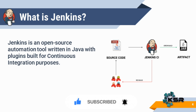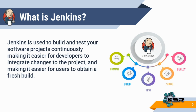Jenkins is a continuous integration tool used to build and test your software projects continuously, making it easier for developers to integrate changes on the project and making it easier for users to obtain a fresh build. In short, Jenkins is a continuous integration tool that allows continuous development, test, and deployment of newly created code. So how was development before Jenkins?